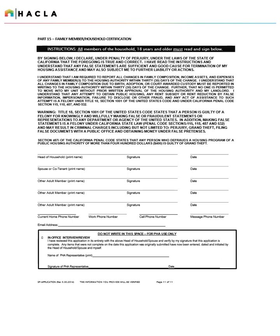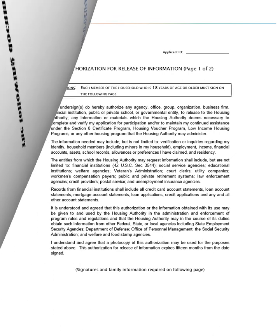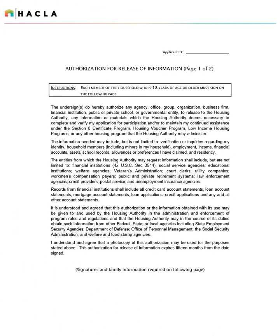All adult household members over the age of 18 should sign and date on this page. This authorization for release of information authorizes any agency, office, group, organization, business firm, financial institution, public or private school, or governmental entity to release to the Housing Authority any information or materials which the Housing Authority deems necessary to complete and verify an application for participation in the PBV program.